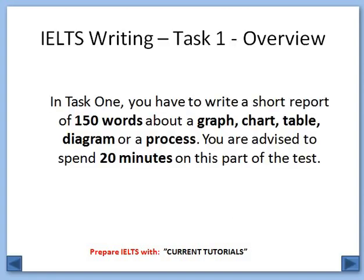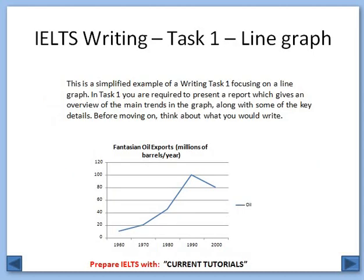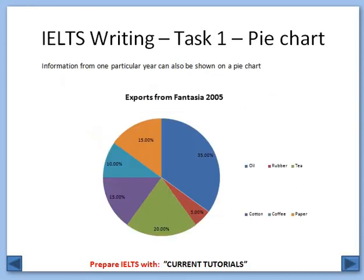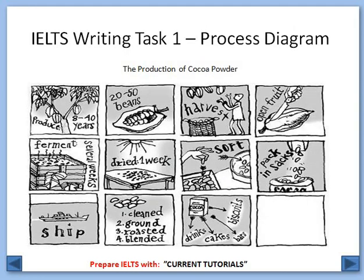In writing task 1, you have to write 150 words about a graph, chart, table, or a process. You are advised to spend 20 minutes on this because you also have to write an essay of 250 words. Writing task 1 can be a line graph, a bar chart, a pie chart, a process diagram, or a map.